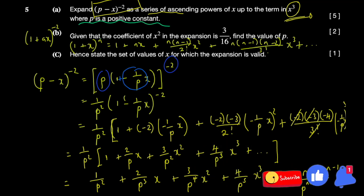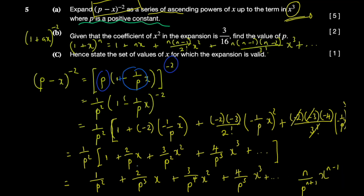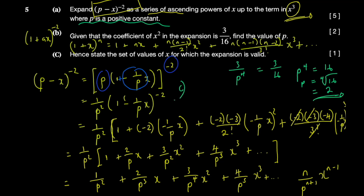For part (b), you're given that the coefficient of x² is 3/16. From our expansion, the coefficient of x² is 3/p⁴. Setting 3/p⁴ = 3/16 gives p⁴ = 16, so p = the fourth root of 16. Since p is positive, p = 2.